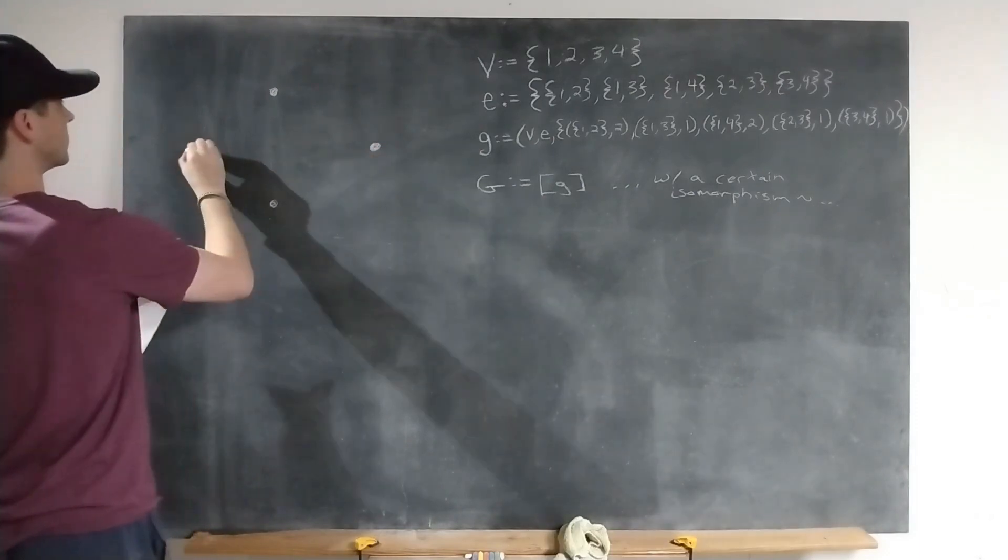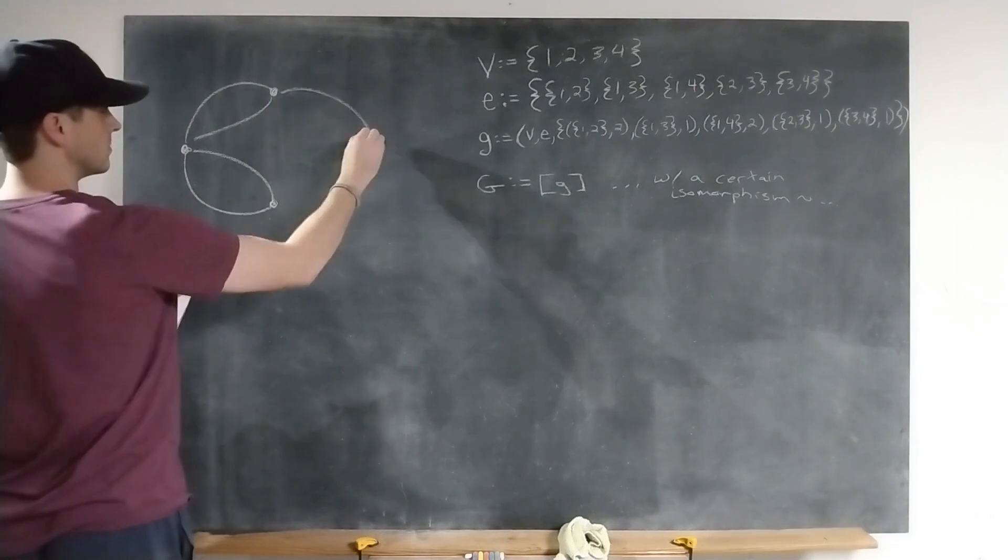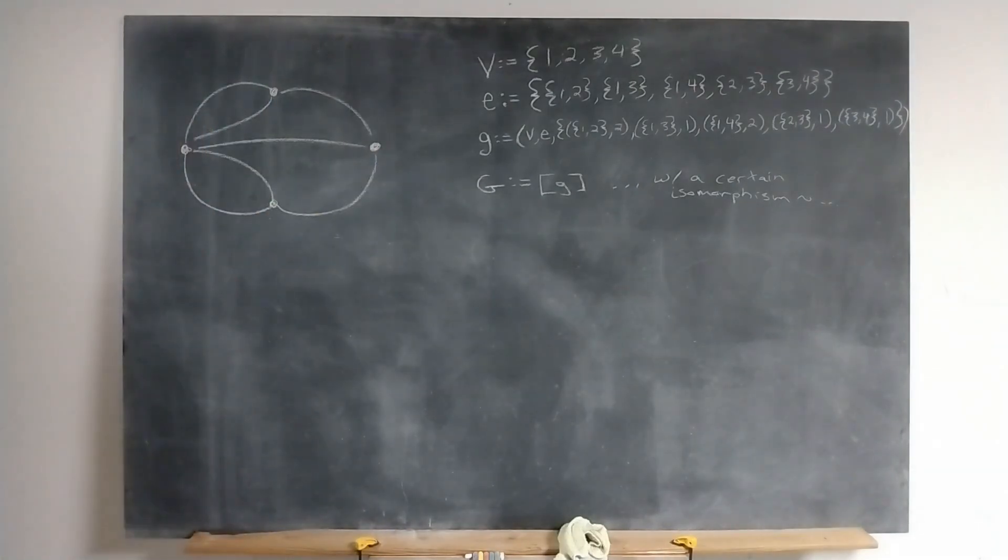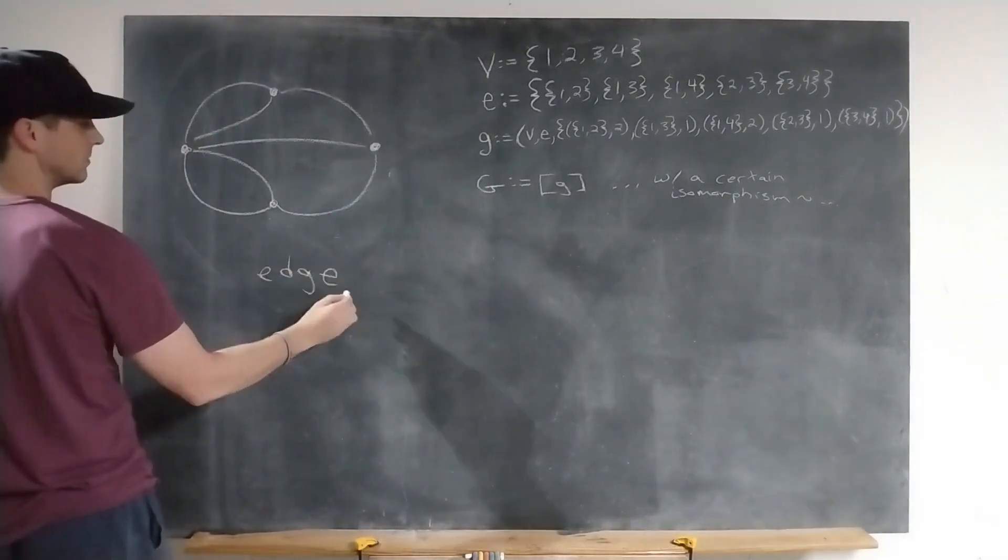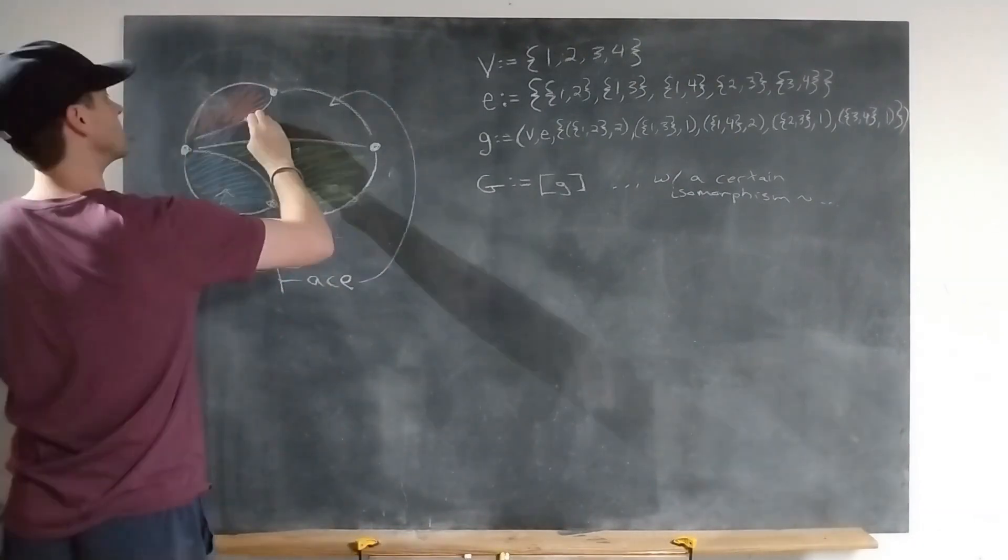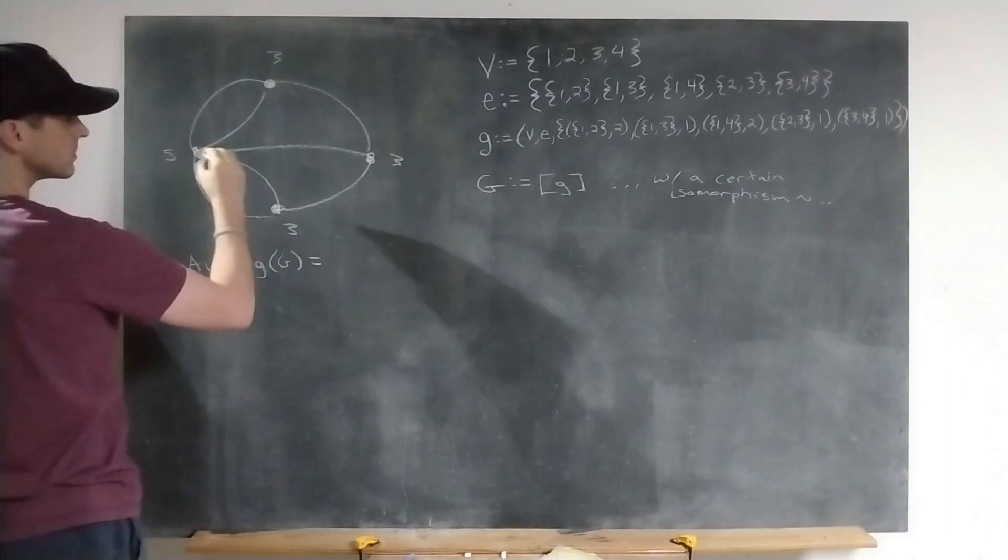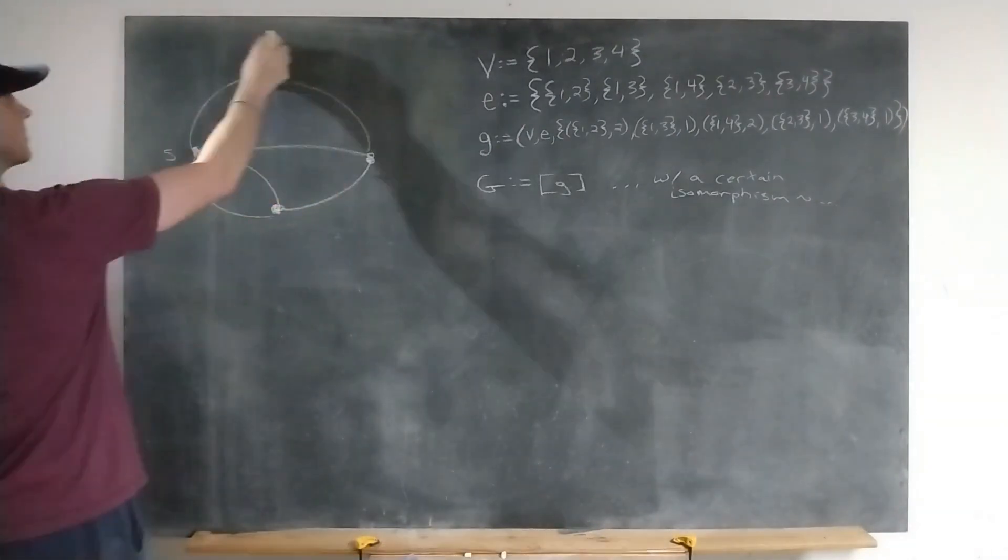The genesis of graph theory goes back to Euler, who solved the famous seven bridges of Konigsberg problem. Because graph theory has been around for some time, we have standard vocab and definitions like vertex, edge, face, degree, which is the number of edges incident to a vertex, or average degree, the average out of all the vertex degrees for a graph.